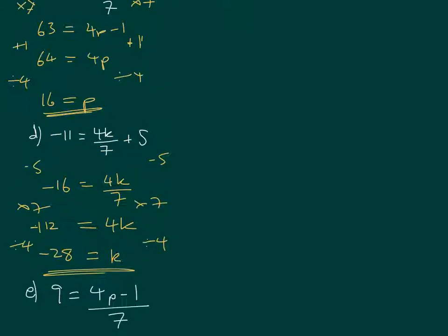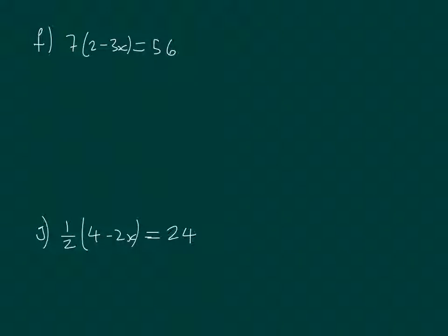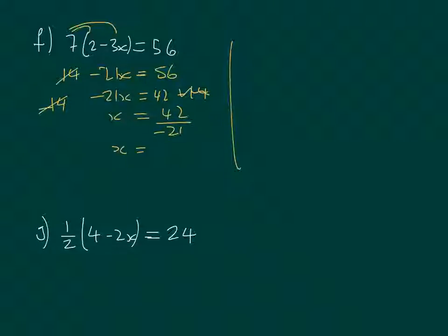E looks like a duplicate of C, so we'll just leave that one. Move on to F. For this one, we've got to multiply out this bracket first. So we're going to have 14 minus 21x equals 56. We didn't necessarily actually have to do that - I'll show you with an alternate example. It's probably quicker to do it the other way. But we'll have minus 21x if we subtract 14 from both sides. So those will cancel out. 56 minus 14 is going to give us 42. And then x is 42 divided by minus 21, which is going to give us minus 2.